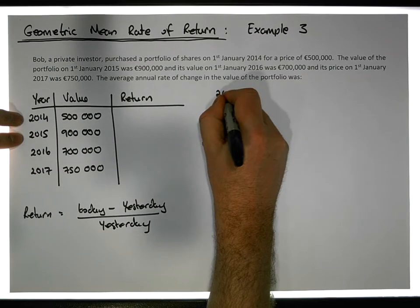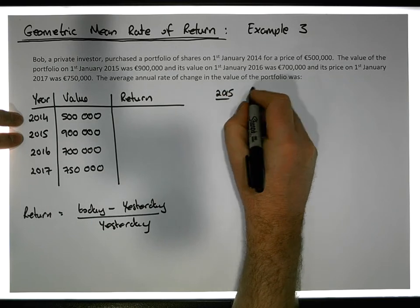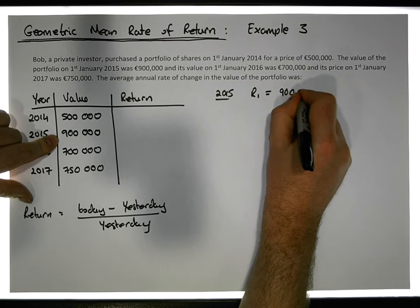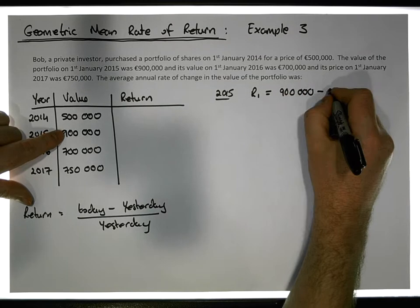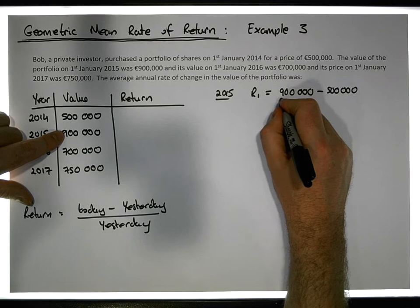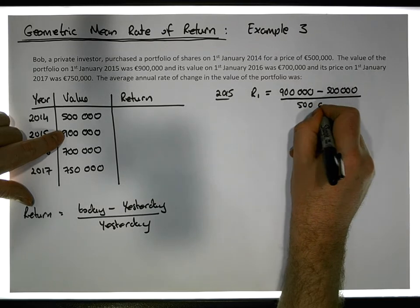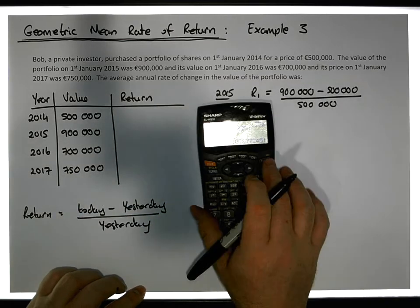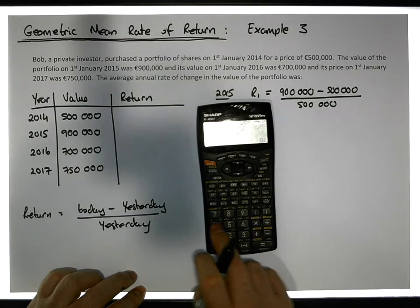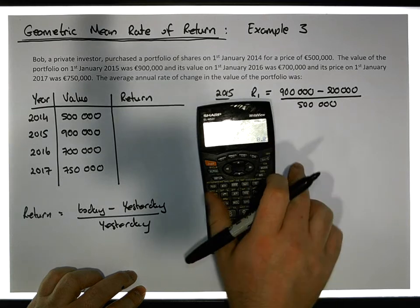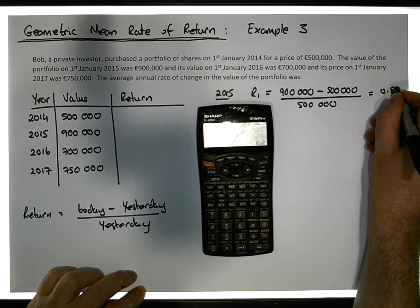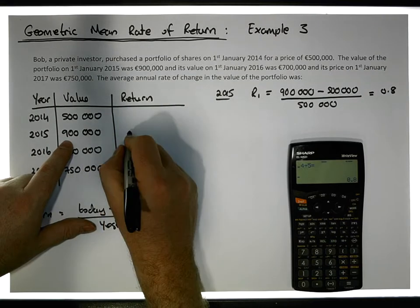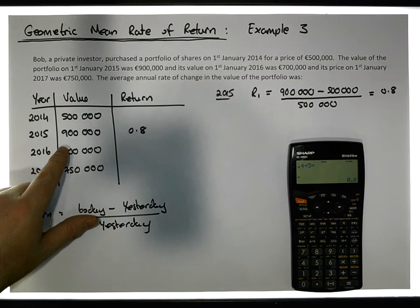So between 2014 and 2015, we want to calculate the return in 2015 — let's call this R1. It's equal to today's price, which is €900,000, minus yesterday's, which is €500,000, relative to yesterday's, which is €500,000. So we have €900,000 minus €500,000 giving us €400,000, divided by €500,000, which gives us 0.8 — it was an 80% increase in the value of the portfolio.